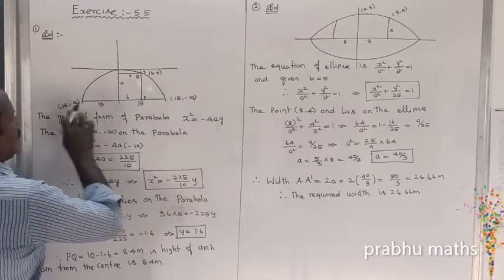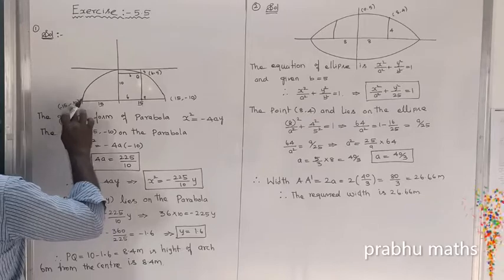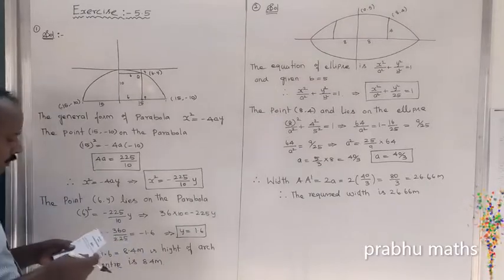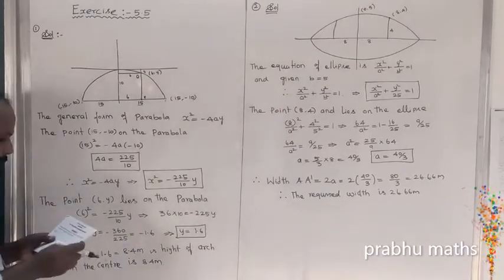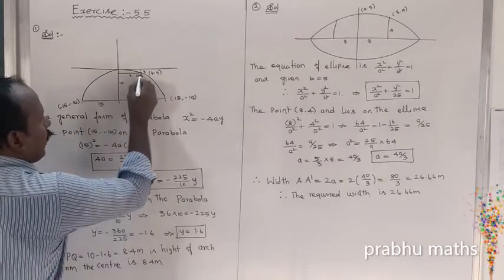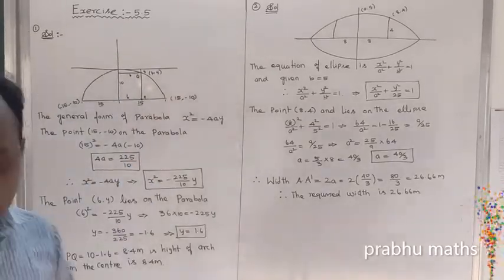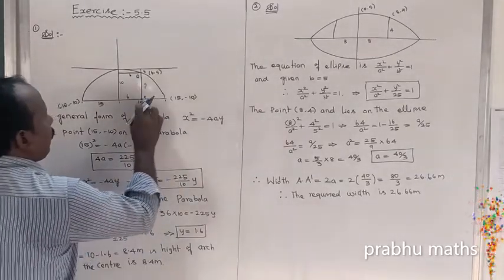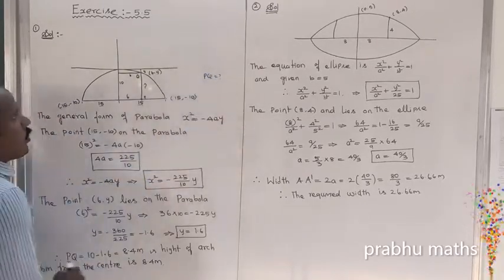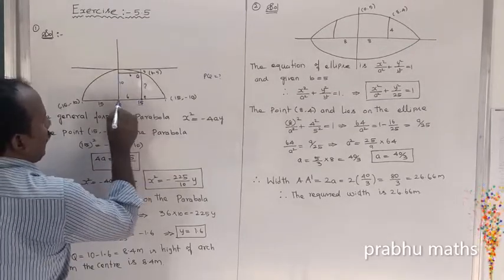The points on the arch are at (minus 15, minus 10) and (15, minus 10). Find the height of the arch 6 meters from the center. The line PQ represents the height. We know the distance on the x-axis, so x will be 6 and y will be the height.